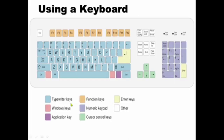Our last topic is using a keyboard. The types of keys include: typewriter keys, Windows keys, application keys, function keys, numeric keys, cursor control keys, enter keys, and other keys. These are the function keys, Windows keys, application keys, numeric keys, cursor control keys, enter keys, and other keys. Thanks for watching!